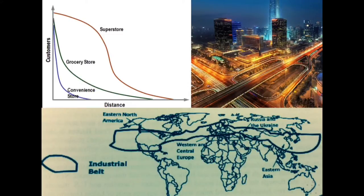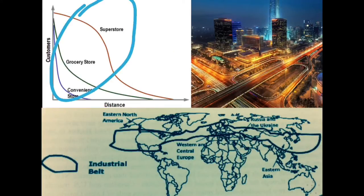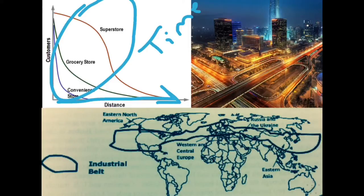First, I want to look at contemporary patterns and impacts of industrialization and development. One of the main key terms is space-time compression. This describes the reduction in the time it takes to diffuse or spread something to a distant place as a result of improved communications and transportation systems. With technology, that's going to change people's willingness to travel more distances because it doesn't take as much time.